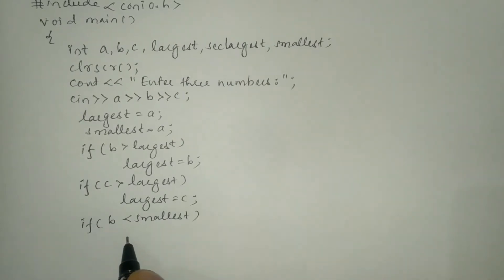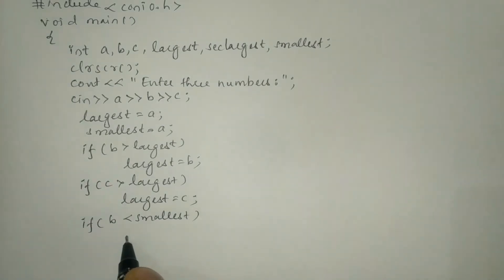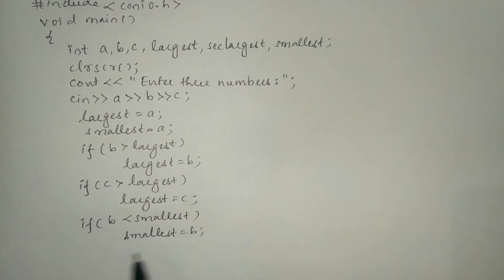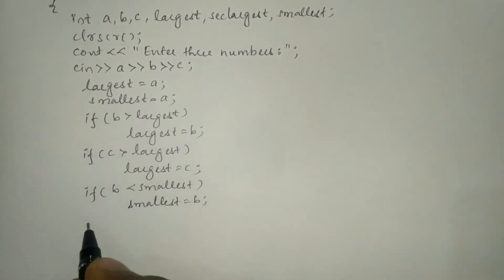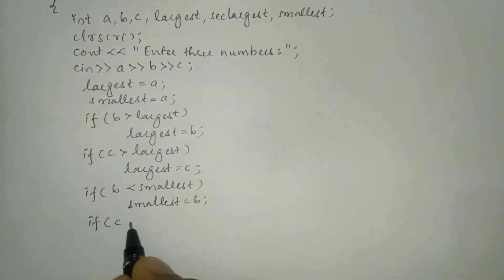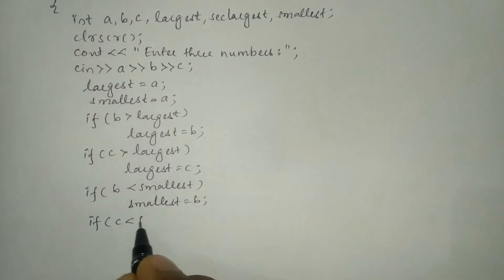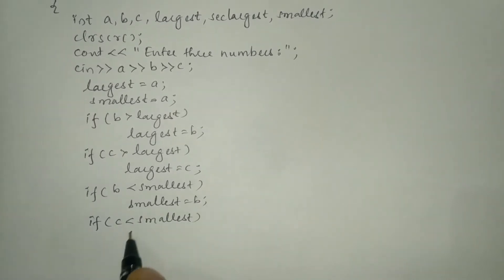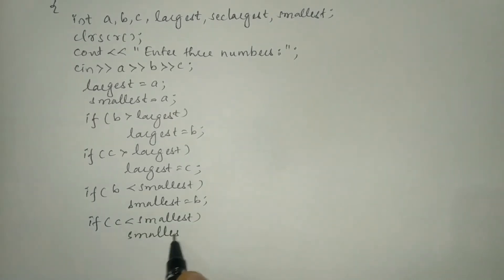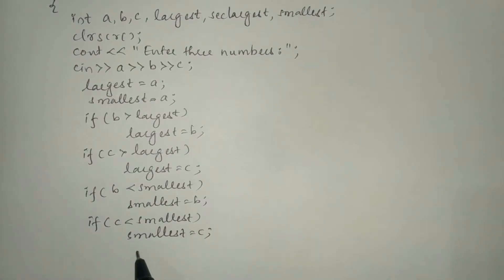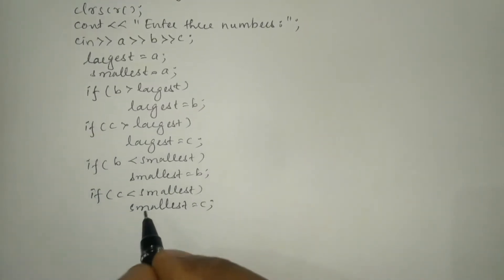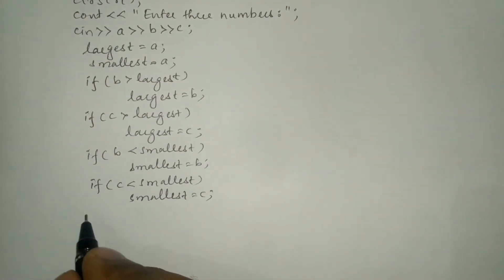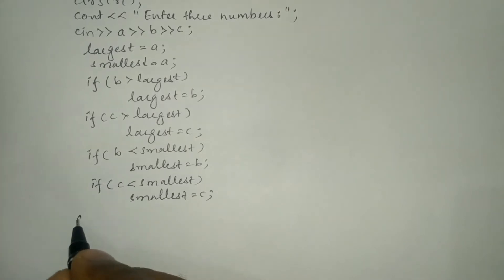Similarly, I'm going to write: if b is less than smallest, then smallest = b. Next, if c is less than smallest, then smallest = c, followed by a semicolon.